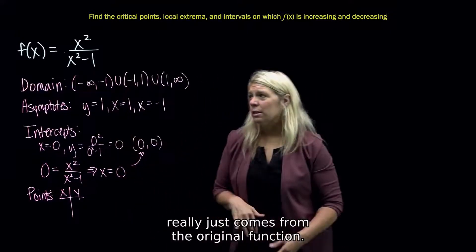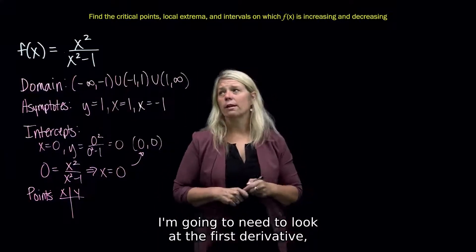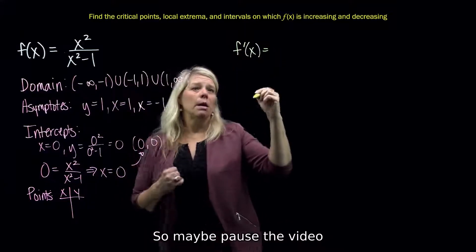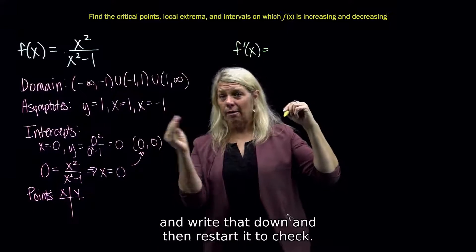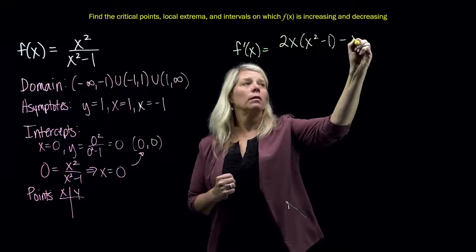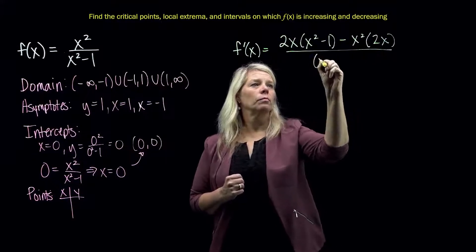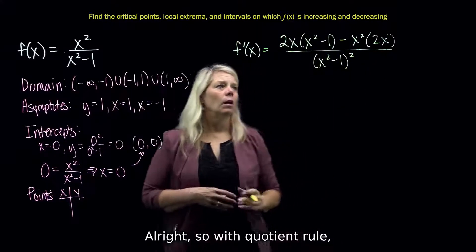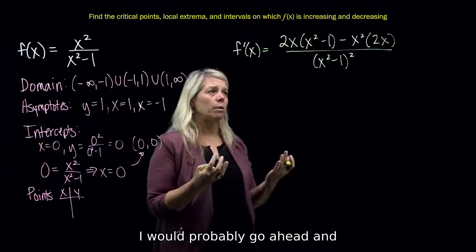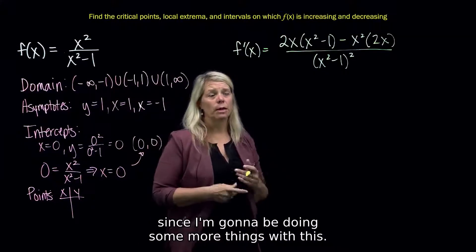All of that stuff really just comes from the original function. For the rest of what I'm asked about, I'm going to need to look at the first derivative. You'll be using quotient rule here, so maybe pause the video and write that down, then restart it to check. With quotient rule I have a bit of a mess with my first derivative — I would probably go ahead and simplify this, at least somewhat, since I'm going to be doing some more things with it.